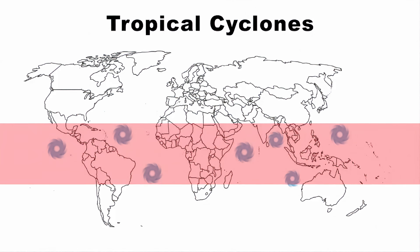This is the tropical region. It is the region of the earth near to the equator and between the Tropic of Cancer in the northern hemisphere and the Tropic of Capricorn in the southern hemisphere.